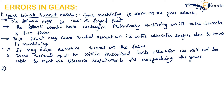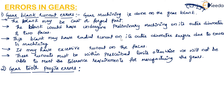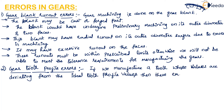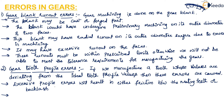The second type is gear tooth profile errors. These errors are caused by deviation of the actual tooth profile from the ideal tooth profile. If the manufactured tooth profile deviates from the ideal value, these errors are caused. If there is excessive profile error, there will be friction or backlash between the mating teeth. If the profile errors are on the positive side, friction is caused; if on the negative side, backlash is caused.